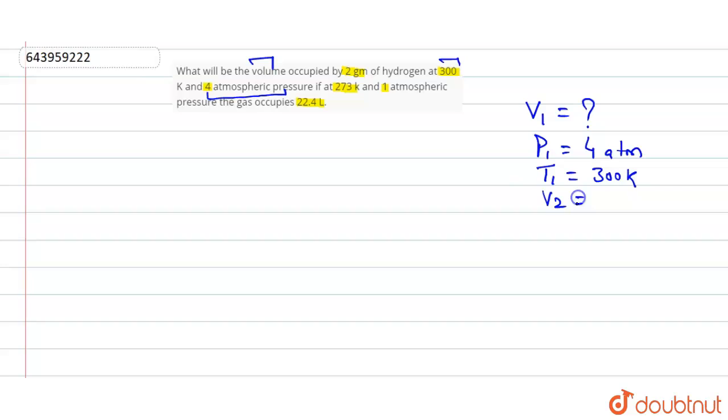What is V2? V2 is the second volume given here, 22.4 liter. And what is given P2 here? What is the pressure two? Pressure two is given here 1 atm. And T2 is here 273 K. Okay, so these are the units given in question, these are the values, and we have to find the V1 here.